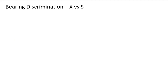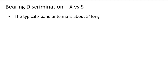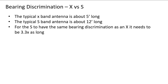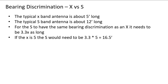X band is better at bearing discrimination than S band. A typical X band antenna is about five feet long, and a typical S band antenna is about twelve feet long — about two and a half times longer. But for S band to have the same bearing discrimination as X band, it would actually need to be 3.3 times as long. If X is five feet, S would need to be 16.5 feet. You're not going to find a 16.5-foot S band antenna because it becomes ungainly — it has to operate in 100-knot winds, needs a stronger motor, and would be more expensive.